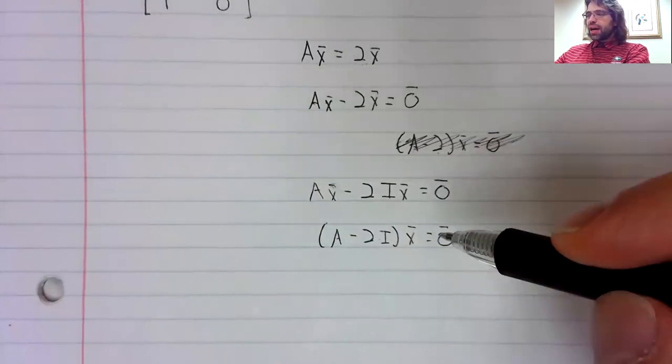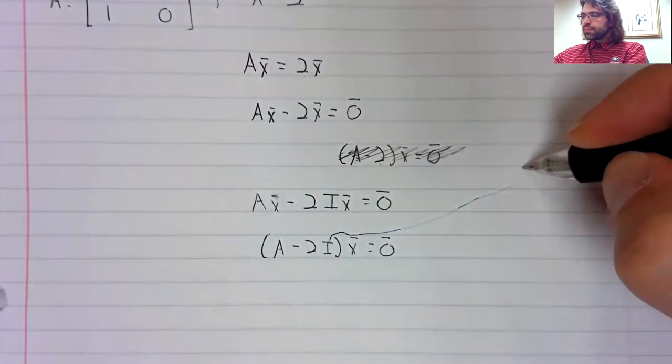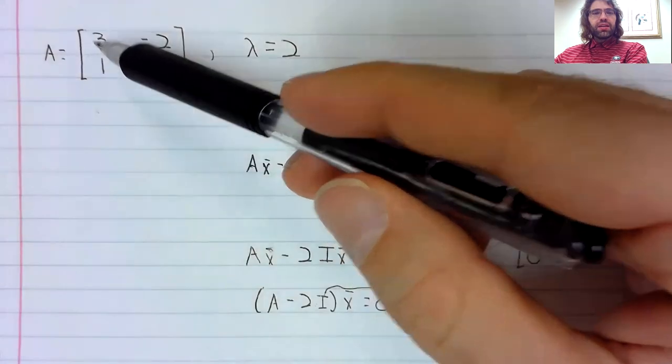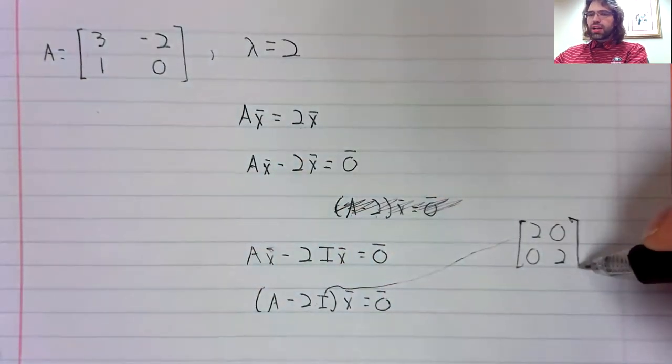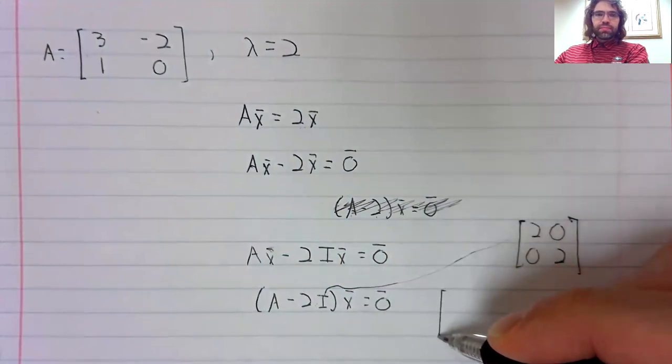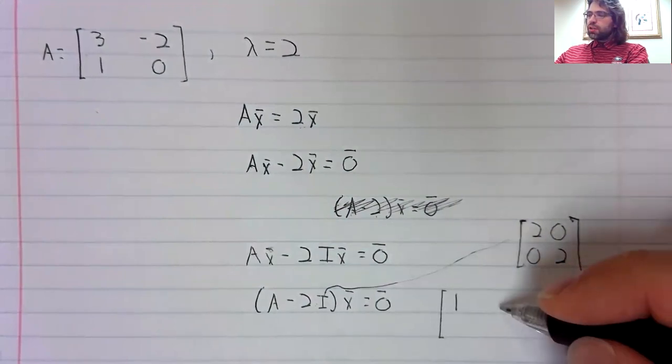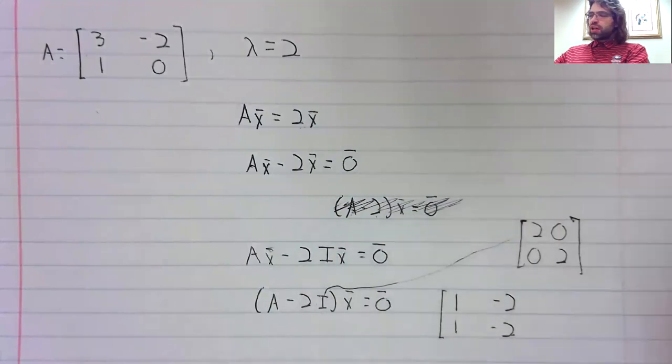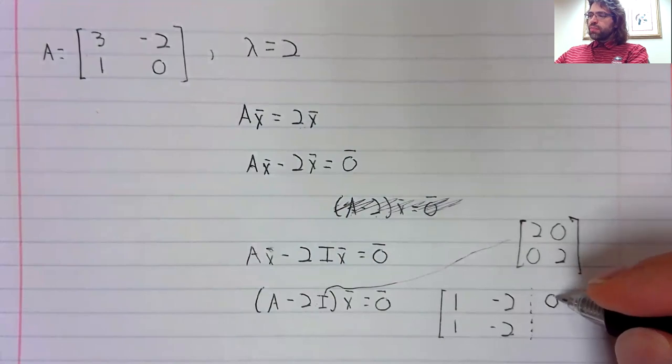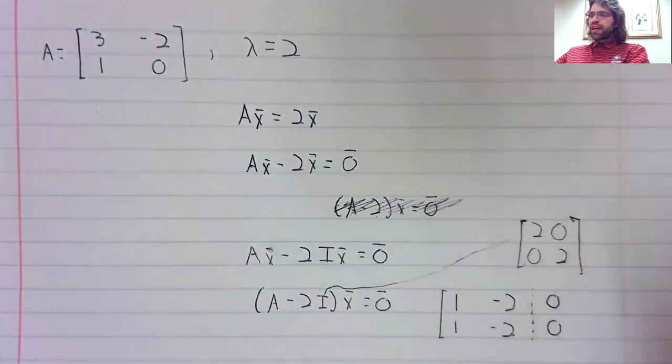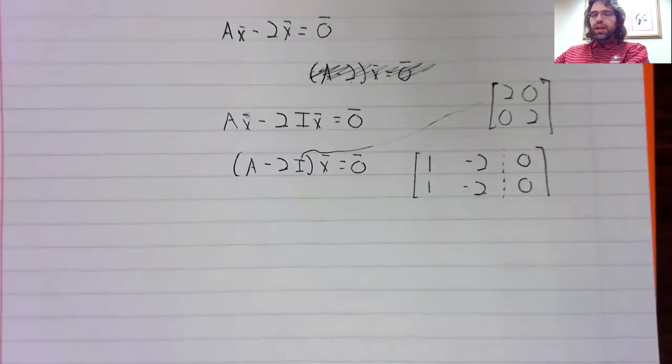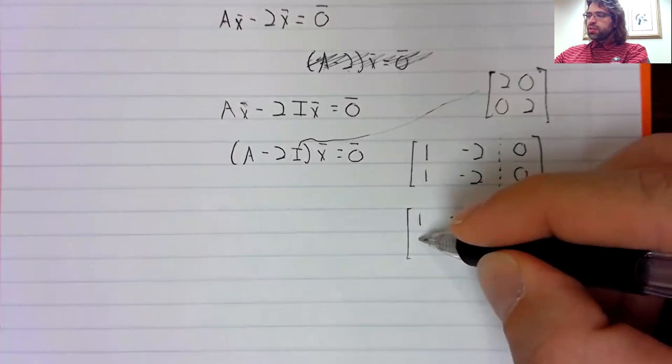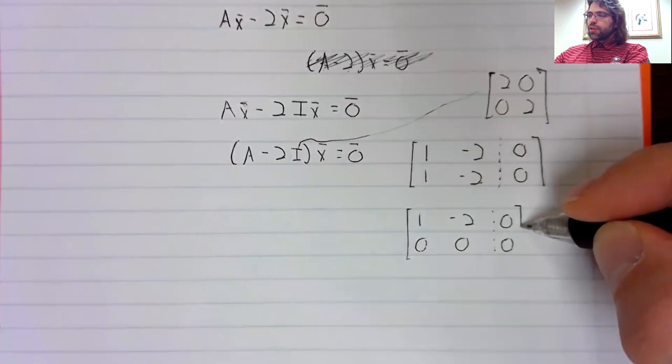So two times I, I is this. And A minus two times I is, let me see, this becomes one negative two, one negative two. Here's A minus two times I. And to solve this equation, we augment with this zero vector. And when we perform Gauss-Jordan elimination, we get this.